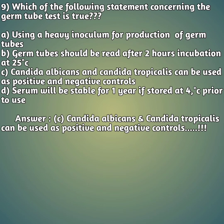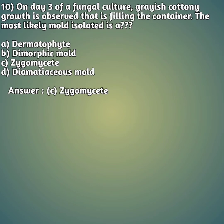Tenth question: on day three of your fungal culture, grayish cottony growth is observed filling the container. The most likely mold isolated is — option A: dermatophyte; option B: dimorphic mold; option C: zygomycetes; option D: dematiacious mold. The right answer is option C, zygomycetes.